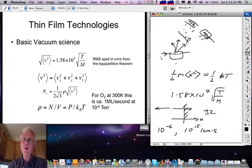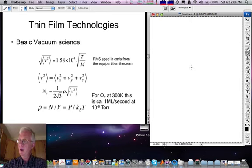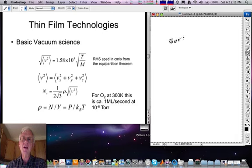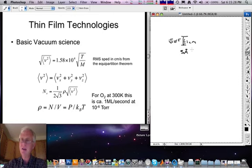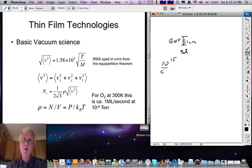Now this is an important number. If we take a look at how many that translates to, so we have 10 to the 15 hitting a box of side one centimeter, this is approximately 3 angstroms per molecule if they're spaced evenly. And since that's about the size of the molecule, a coverage of 10 to the 15 per square centimeter is approximately a monolayer.